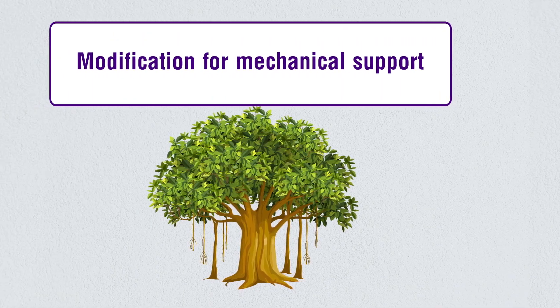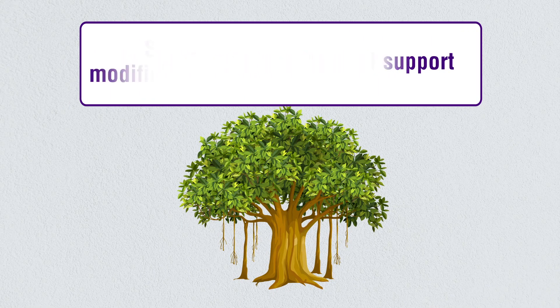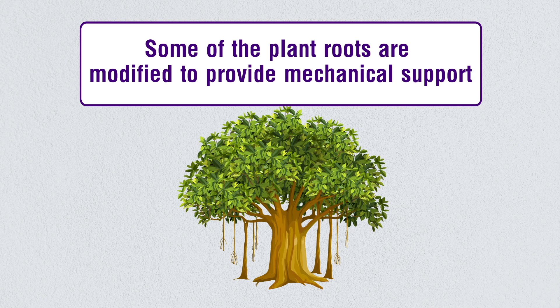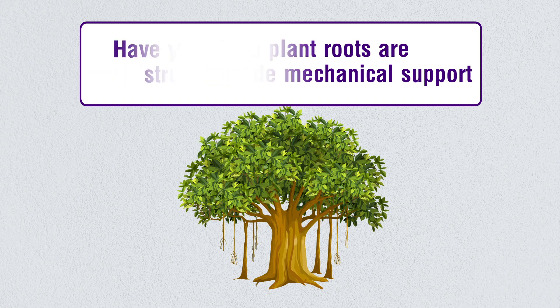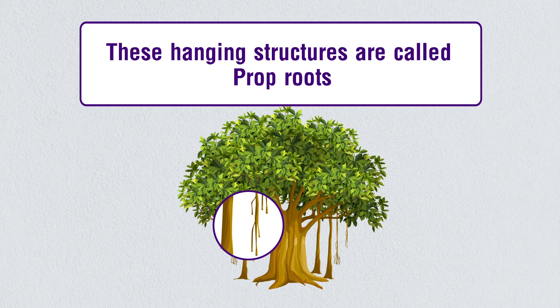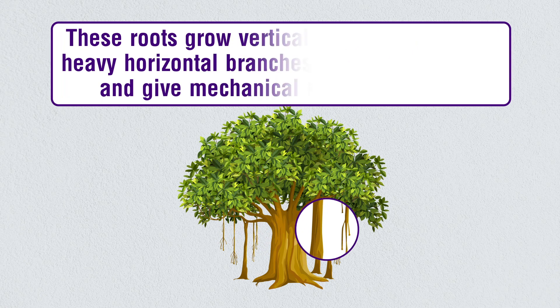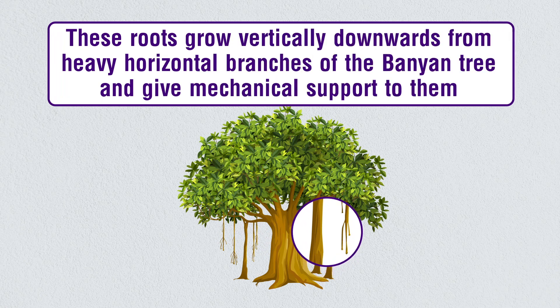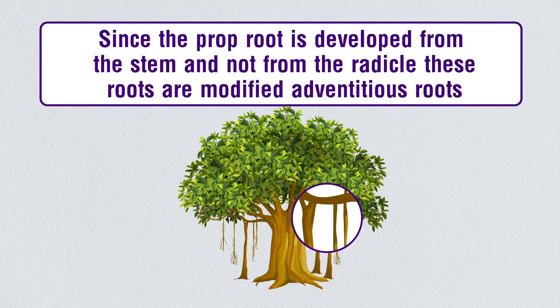Some plant roots are modified to provide mechanical support. In the banyan tree, hanging structures called prop roots grow vertically downwards from heavy horizontal branches and give mechanical support to them. Since prop roots are developed from the stem and not from the radicle, these are modified adventitious roots.